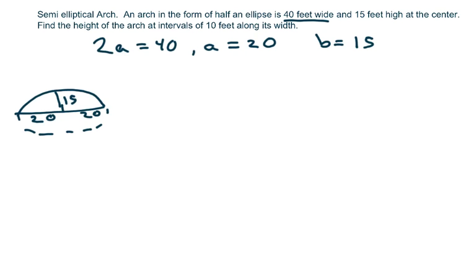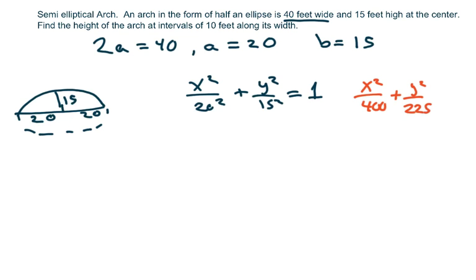Alright, so we have x squared over 20 squared plus y squared over 15 squared equals 1. And if I rewrite that, that's x squared over 400 plus y squared over 225 equals 1.